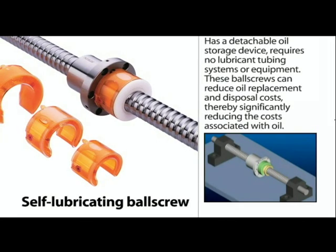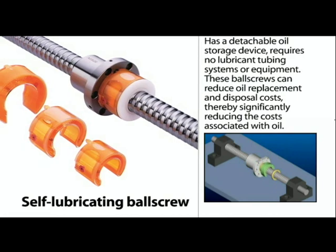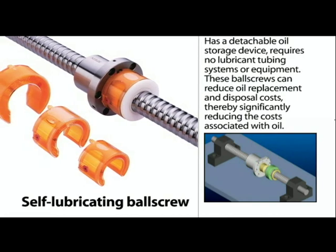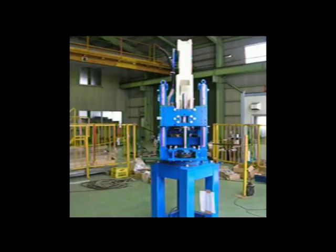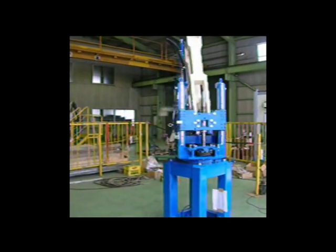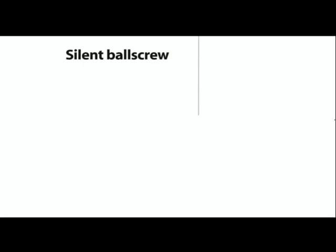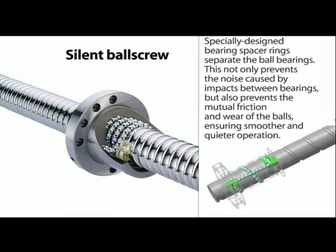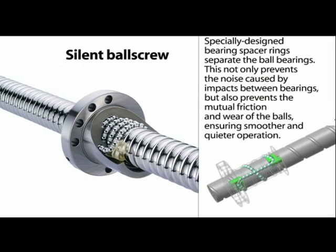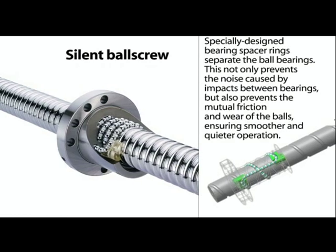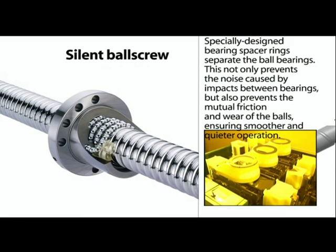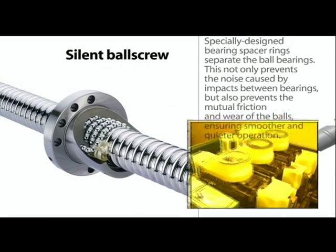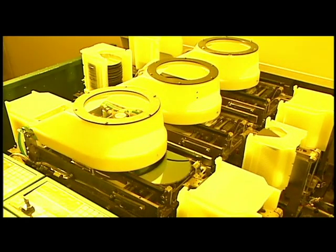Self-lubricating ball screws have a detachable oil storage device and require no lubricant tubing systems or equipment. These ball screws can reduce oil replacement and disposal costs. Silent ball screws have specially designed bearing spacer rings separating their ball bearings. This not only prevents the noise caused by impacts between bearings, but also prevents mutual friction and wear of the balls, ensuring smoother and quieter operation.